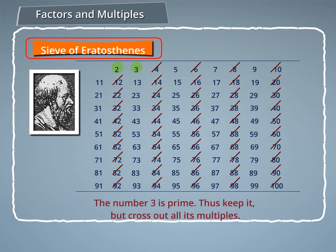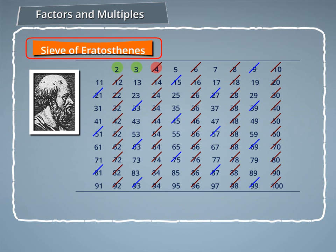Step 3: The number 3 is prime, thus keep it but cross out all its multiples.